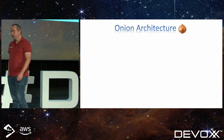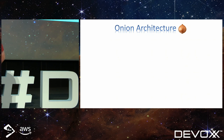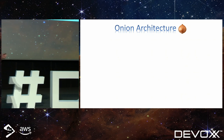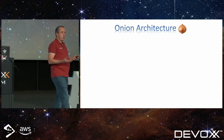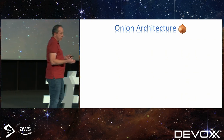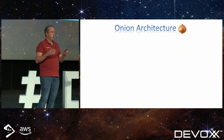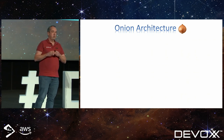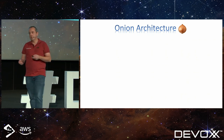One of those is the onion architecture. You might have also heard clean architecture, hexagonal architecture, stuff like that. There are some small differences in approach and naming, but it's more or less the same.